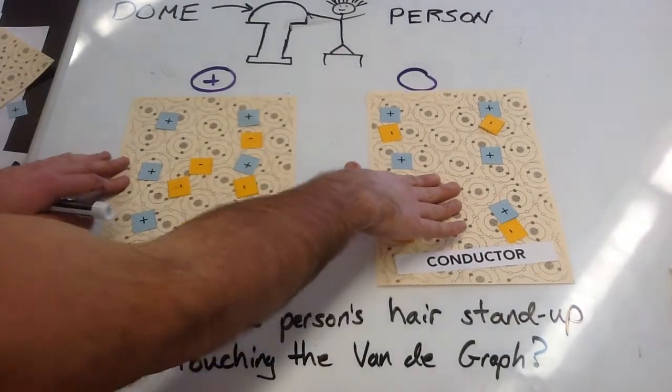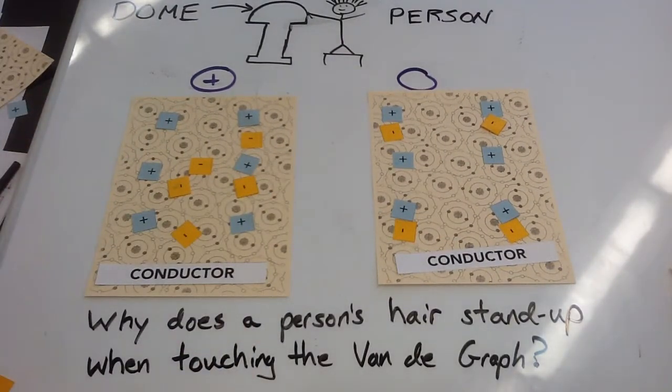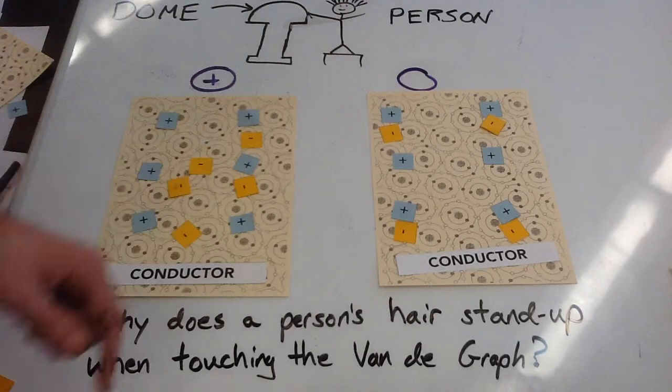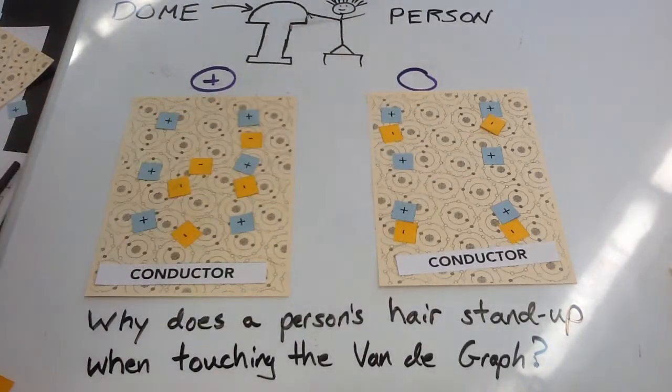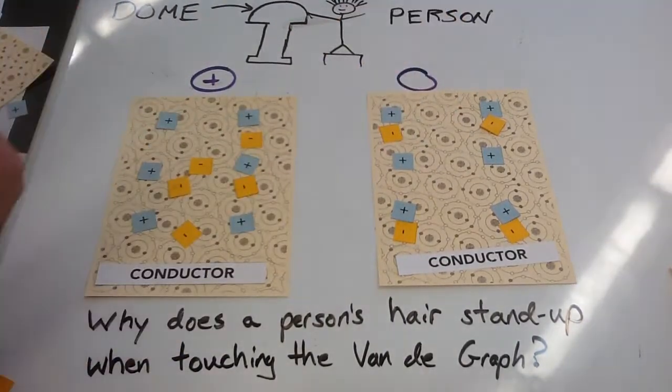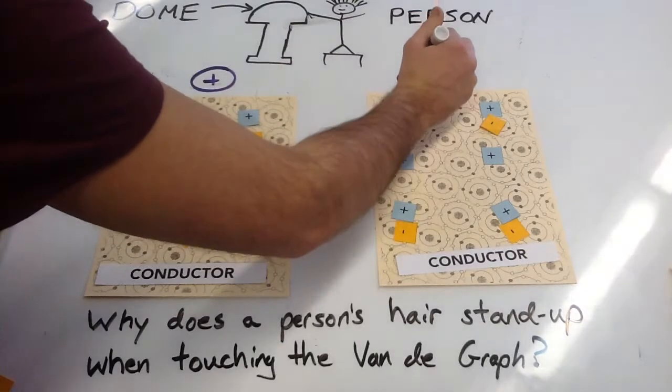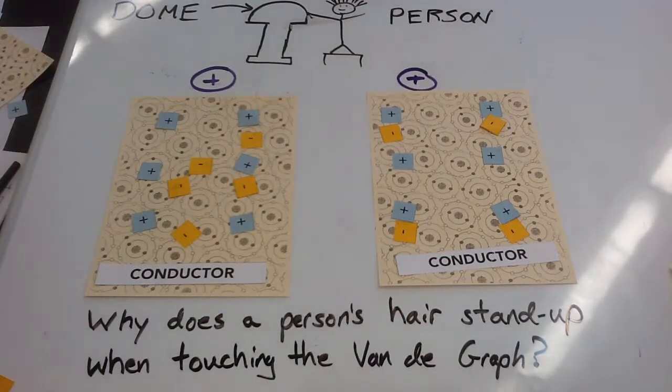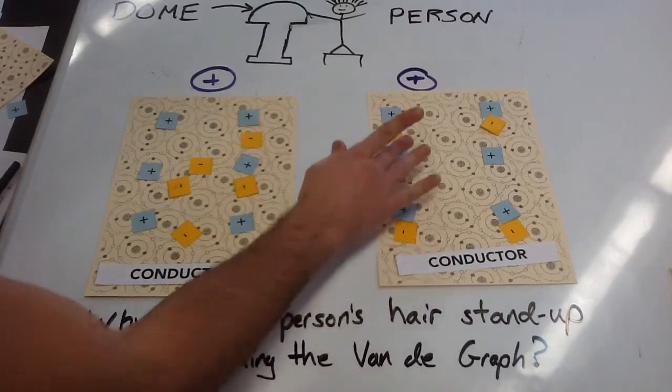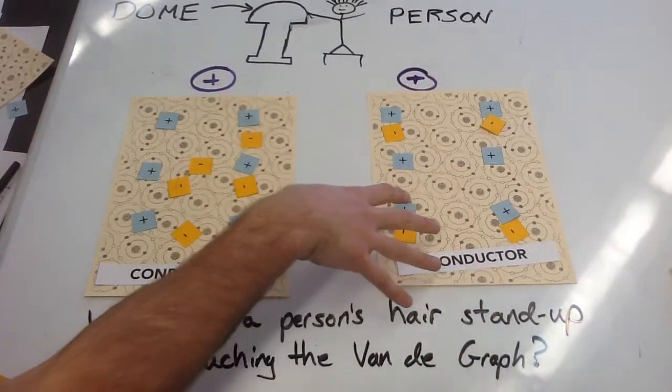So now let's look at the charge of my objects. For my person, it looks like I have less electrons compared to protons, so this object is going to be positively charged everywhere. I know it's charged everywhere because it's a conductor and the charge is evenly distributed.